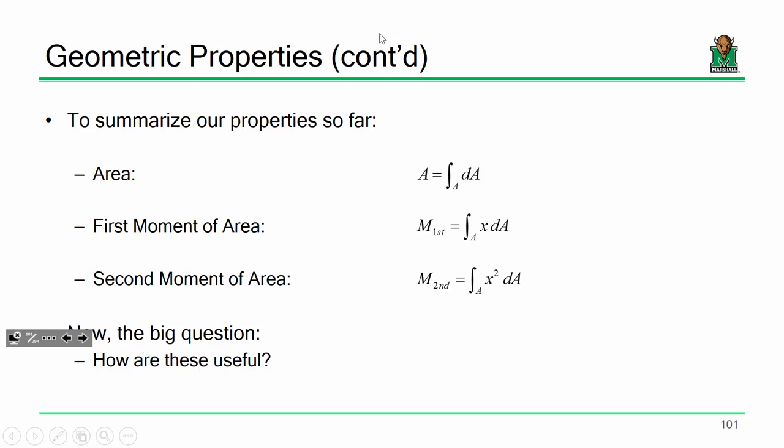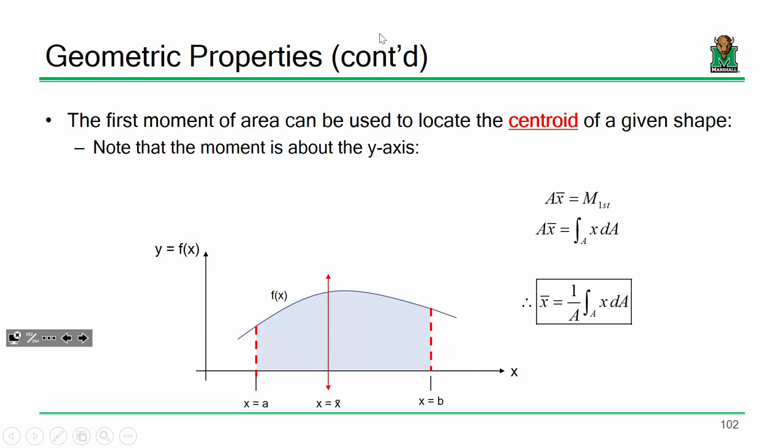Why do we care? One of the biggest uses is to compute a centroid or center of gravity. If I have some complex shape, I want to represent the moment contributed by that shape as just an area times a given distance x-bar — an average moment arm. If the area times x-bar equals the first moment, then x-bar equals one over the area times the integral of x dA.